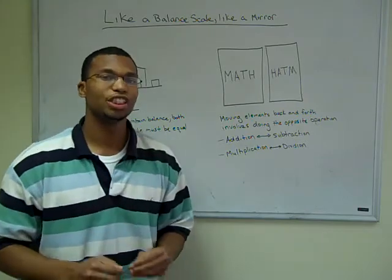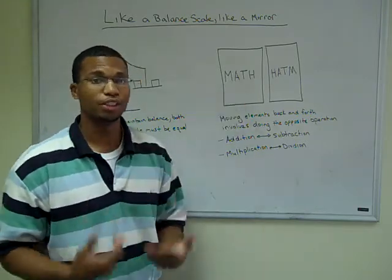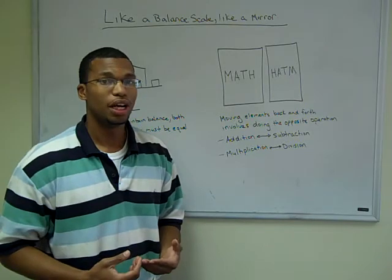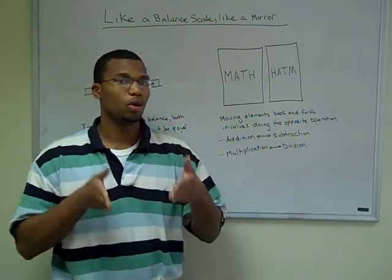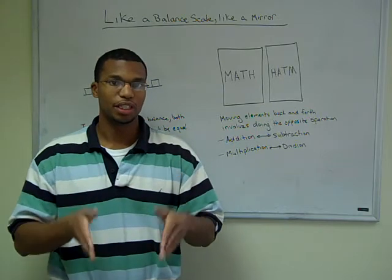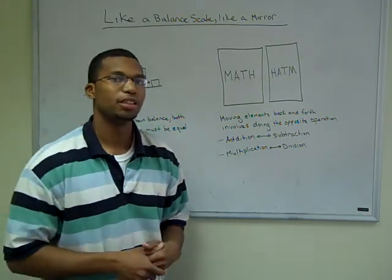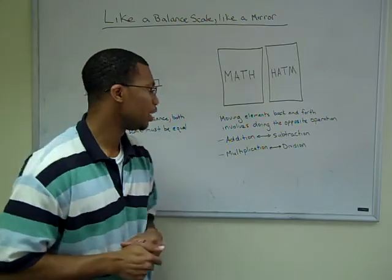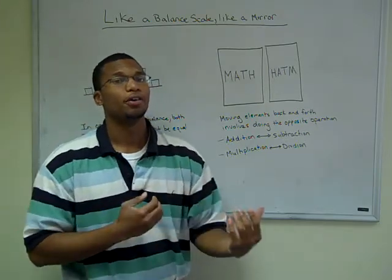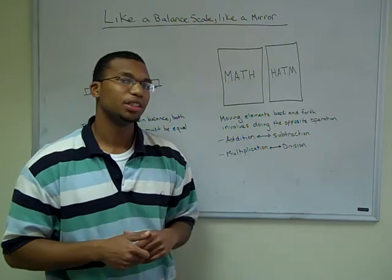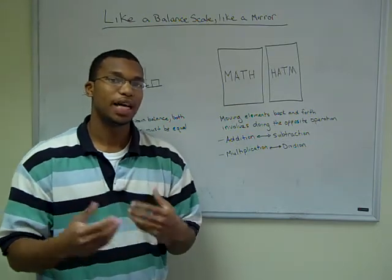An equation is also like a mirror. A mirror has reflective quantities — it's going to look one way visually, but another way as the mirror reflects. This is like an equation because as we move elements back and forth across the equation, we're going to have to perform the opposite operation.